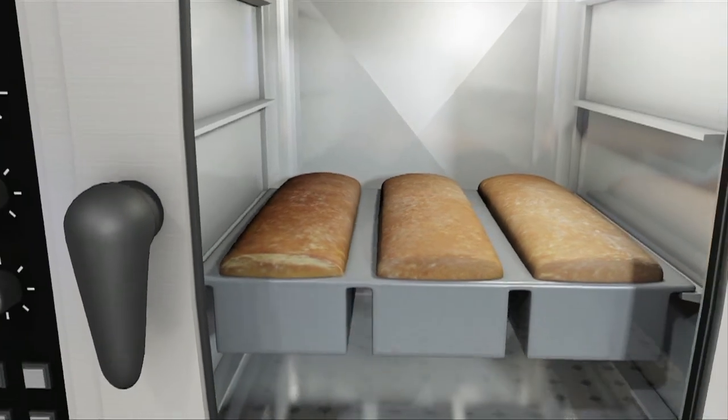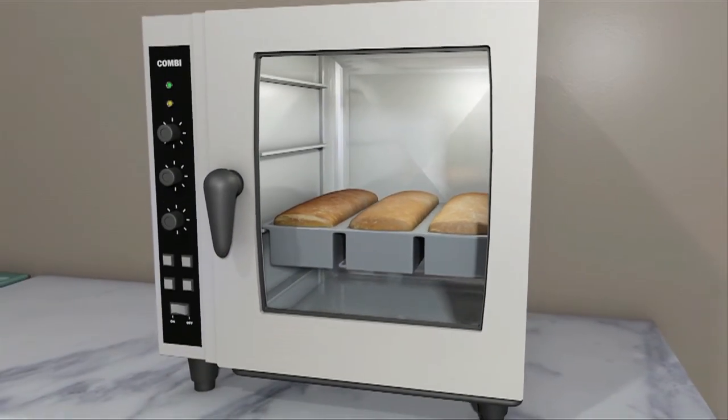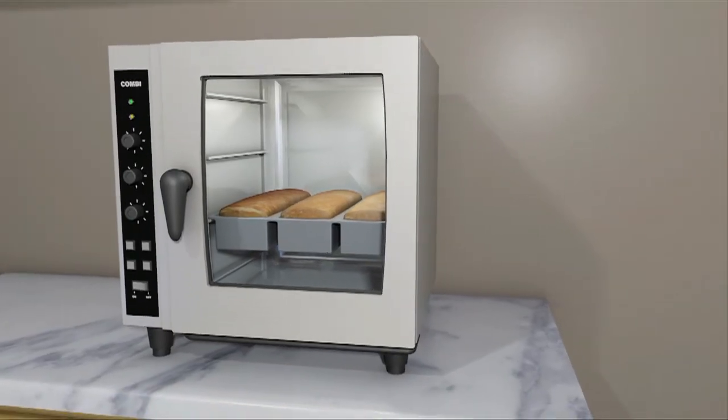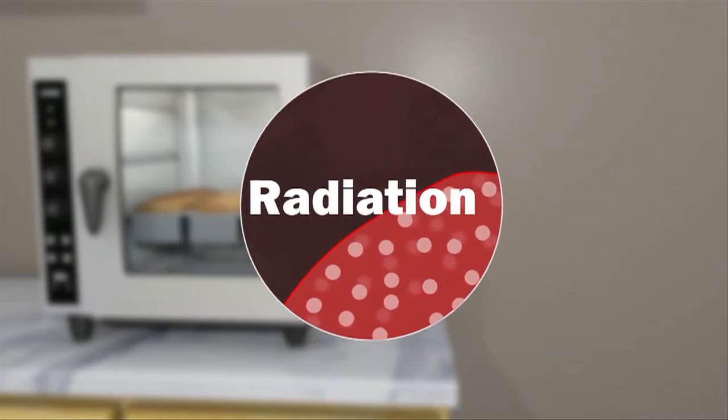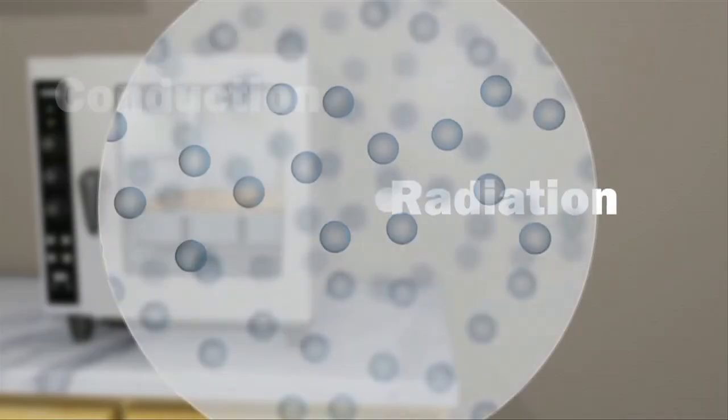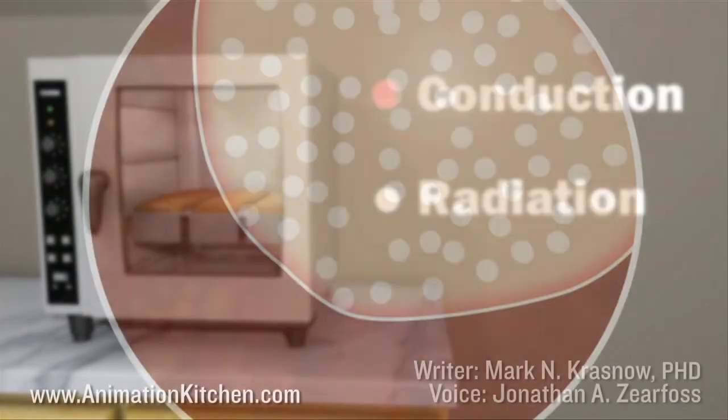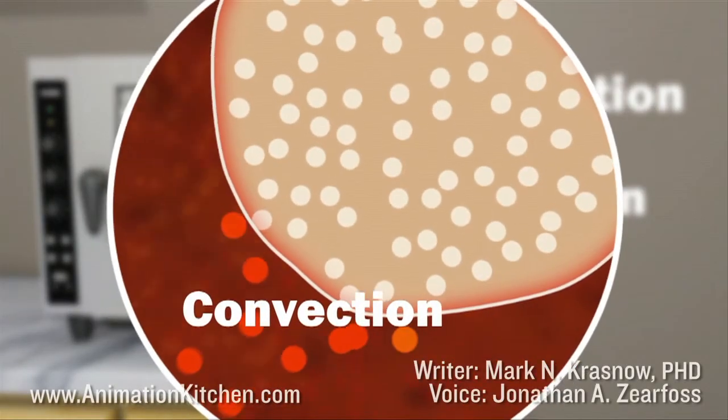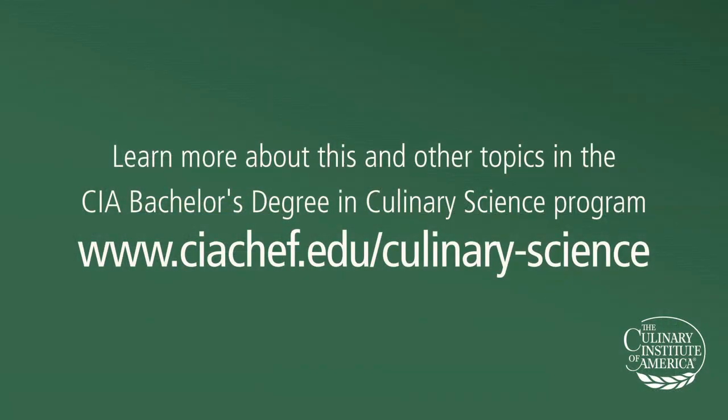Modern ovens, such as a combi unit, can employ all three heat transfer mechanisms to cook food. For example, bread. Heat is radiated from the elements, which heats the air, the bread, and the baking sheet, which conducts heat to the bread. A fan in the oven creates convection currents to speed the heating by moving the hot air around inside the oven.